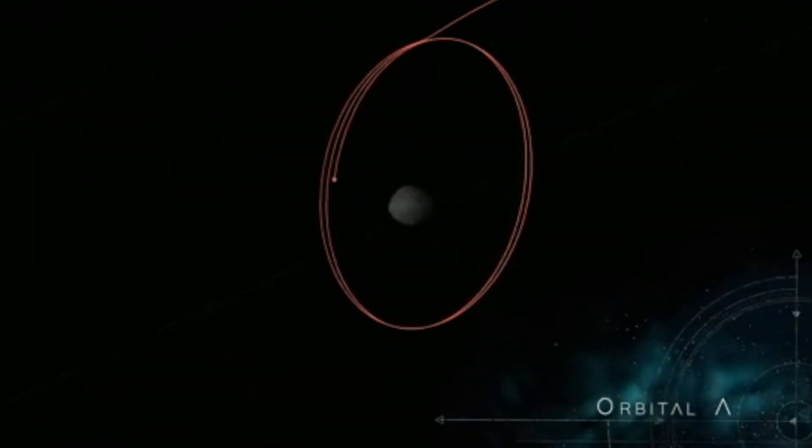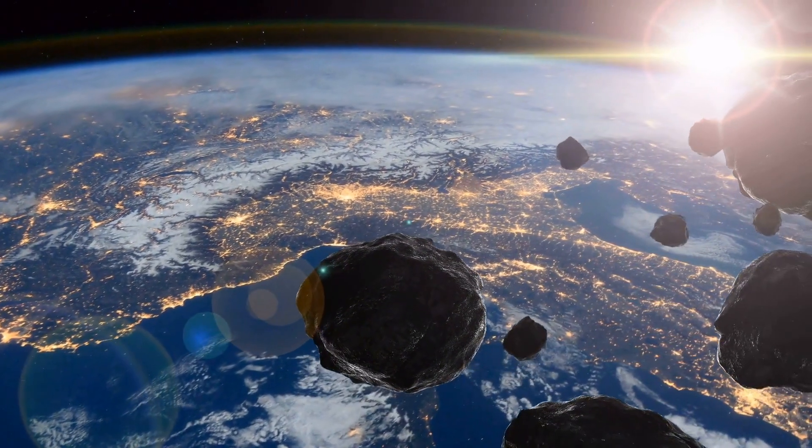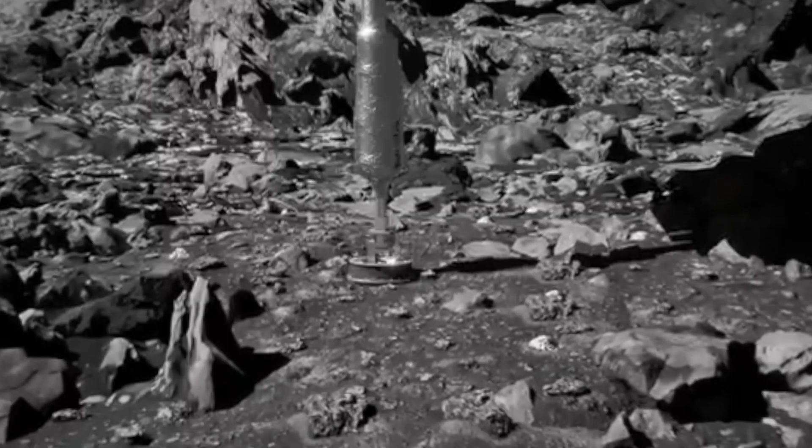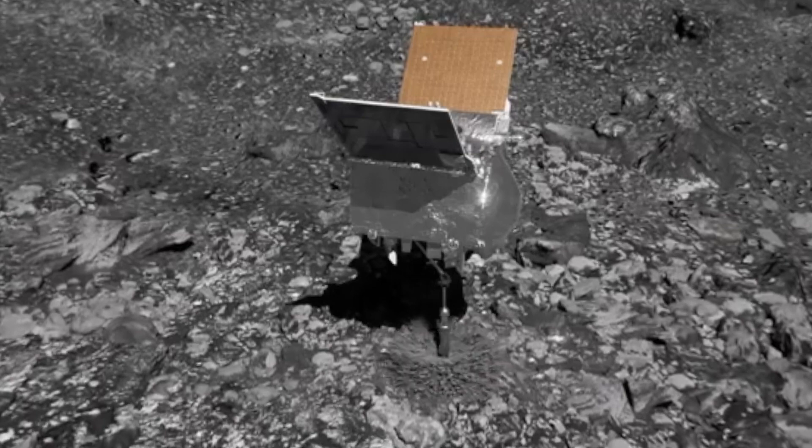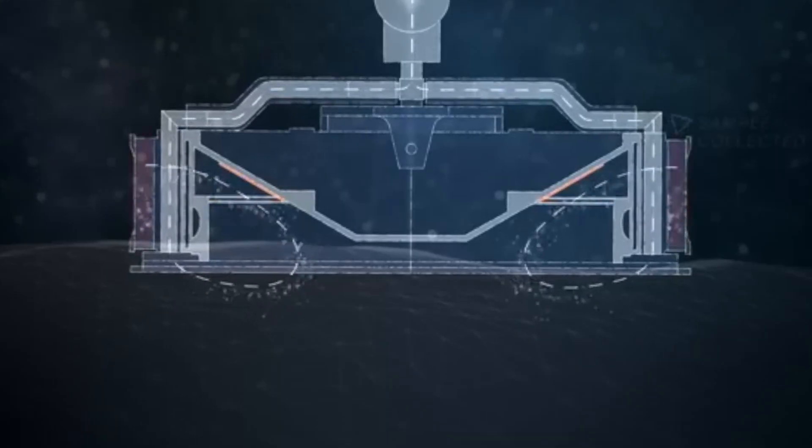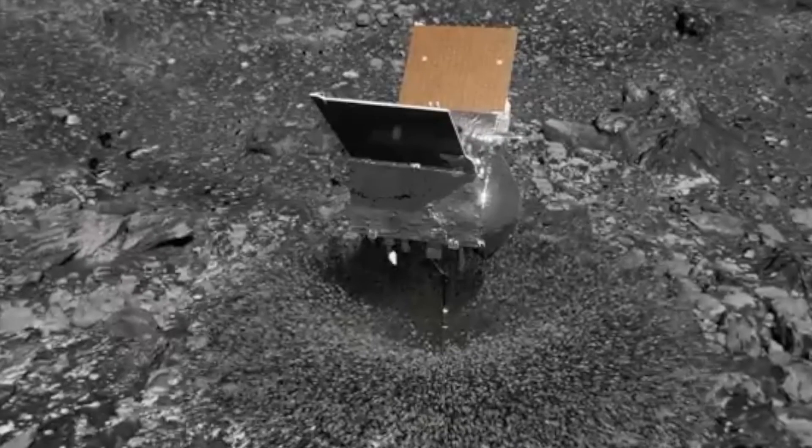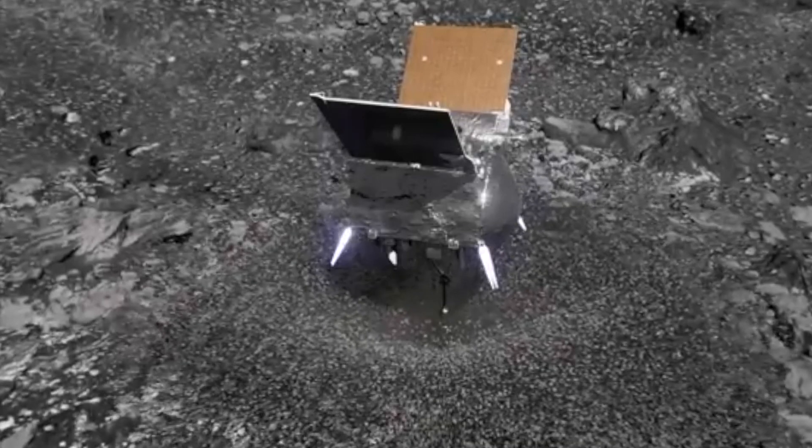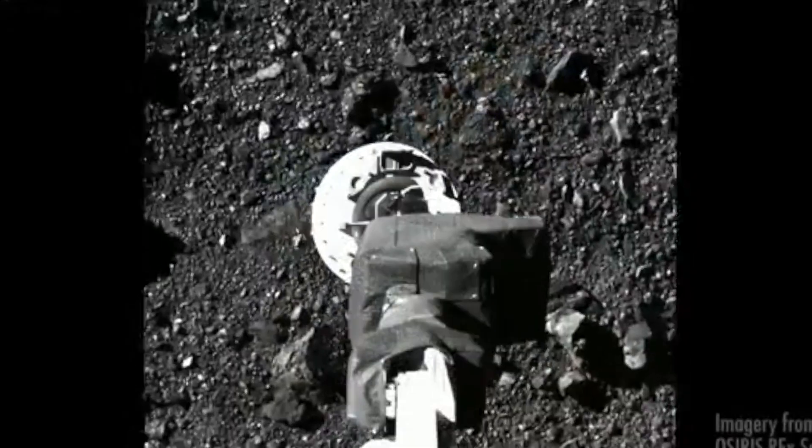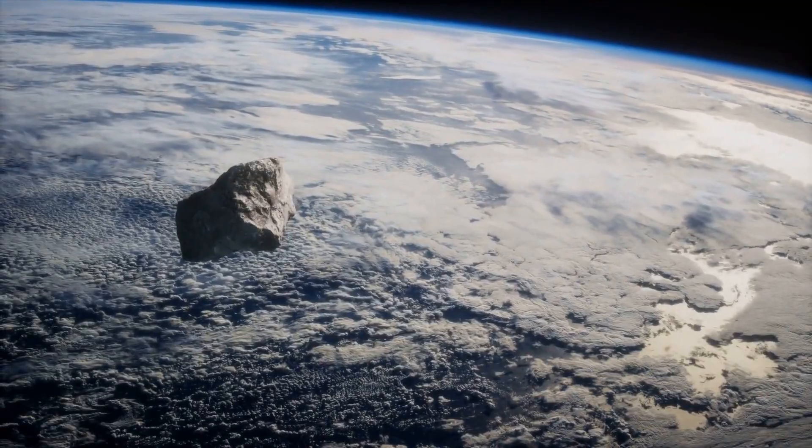The most thrilling phase of the mission was the sample collection event, which took place on October 20, 2020. The spacecraft employed its touch-and-go sample acquisition mechanism, TAGSAM, a robotic arm, to make brief contact with the asteroid's surface and collect the sample. Given Bennu's small size with a diameter of just half a kilometer, this was a challenging task. OSIRIS-REx had only one chance, with no room for error.